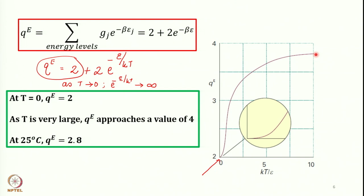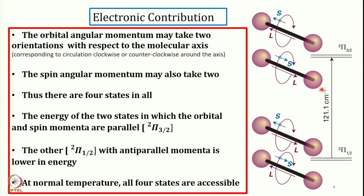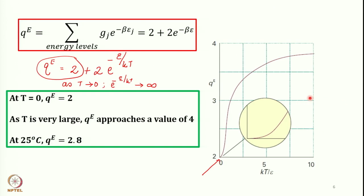When temperature is infinity, 1/∞ = 0, so the exponential becomes 1 and QE approaches 4. At T → 0, QE → 2; at very large T, QE → 4. At 25°C (298 K), using the energy separation of 121.1 cm⁻¹, QE evaluates to 2.8. So even for a molecule with a low-lying electronic excited state, the contribution at room temperature is not very large — just 2.8.